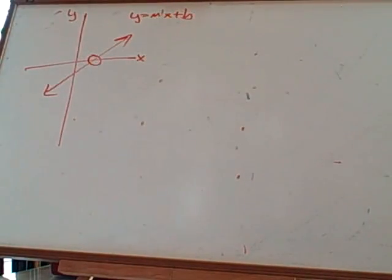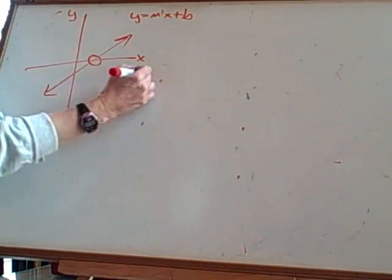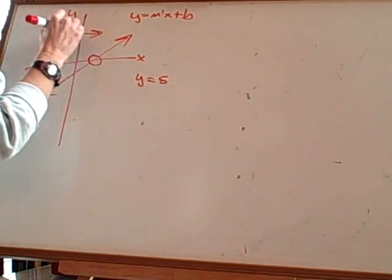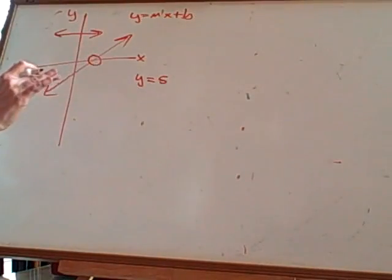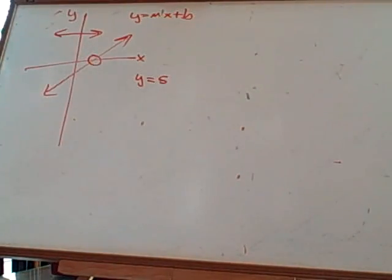That's all the roots it can have. It can have one root. It doesn't actually have to cross the x-axis ever, because it could be y equals 5, and that would be like a horizontal line up here that never does it. That would be like a zero degree.